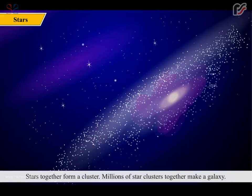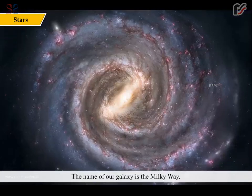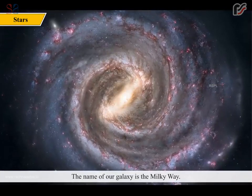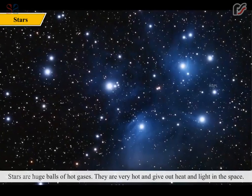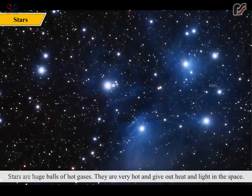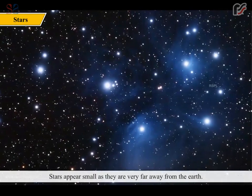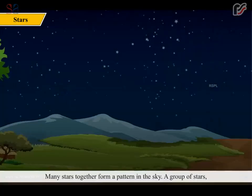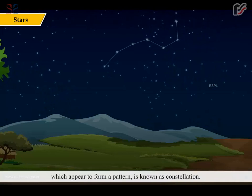Stars together form a cluster. Millions of star clusters together make a galaxy. The name of our galaxy is the Milky Way. Stars are huge balls of hot gases. They are very hot and give out heat and light in the space. Stars appear small as they are very far away from the Earth. Many stars together form a pattern in the sky. A group of stars which appear to form a pattern is known as a constellation.